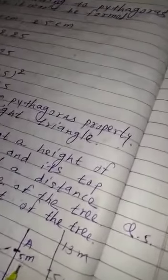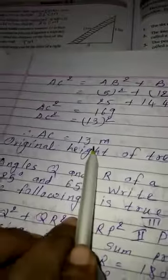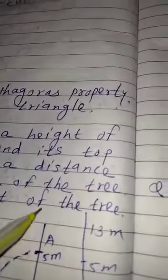Now, its measurement is given 5 meter and here 12 meter. So, square of 5 is 25 and the square of 12 is 144. The total is 169. Its root is 13 meter.